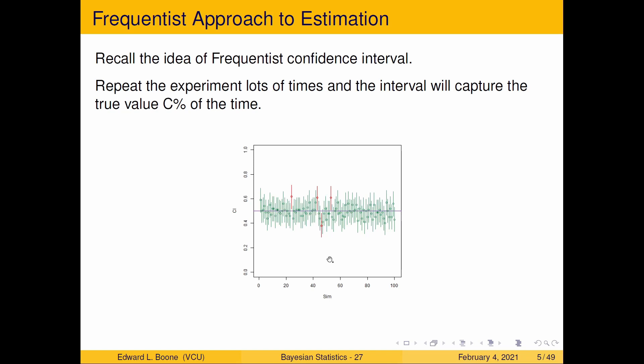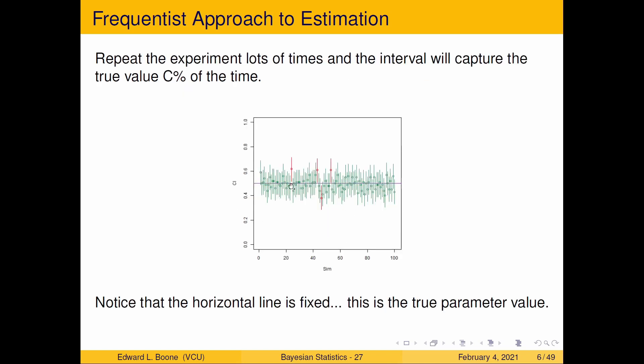That's how you have to think about the frequentist approach on this because if you look at this the horizontal line is fixed, it's not moving so you can't talk about things so easily. If you notice the interval is what is random, those end points are changing, it's moving around and it varies from experiment to experiment. Not that Bayesian intervals won't vary from experiment to experiment because they do depend on the data.